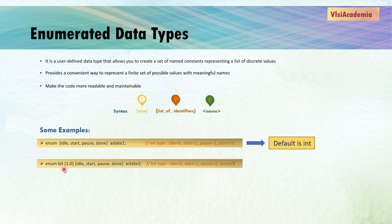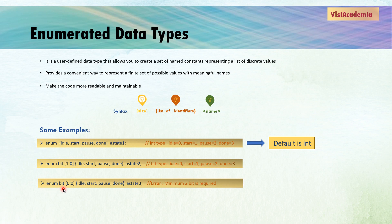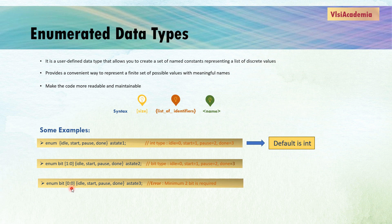In the second example, we specifically mention the data type as 'bit' with a size. In the same way, idle is label for zero, start for one, pause for two, and done for three. In the next example, we define the bit data type size as just two bits — using '2b00' — and if you use this enum data type it will prompt an error, because we need a minimum of two bits to represent four labels.